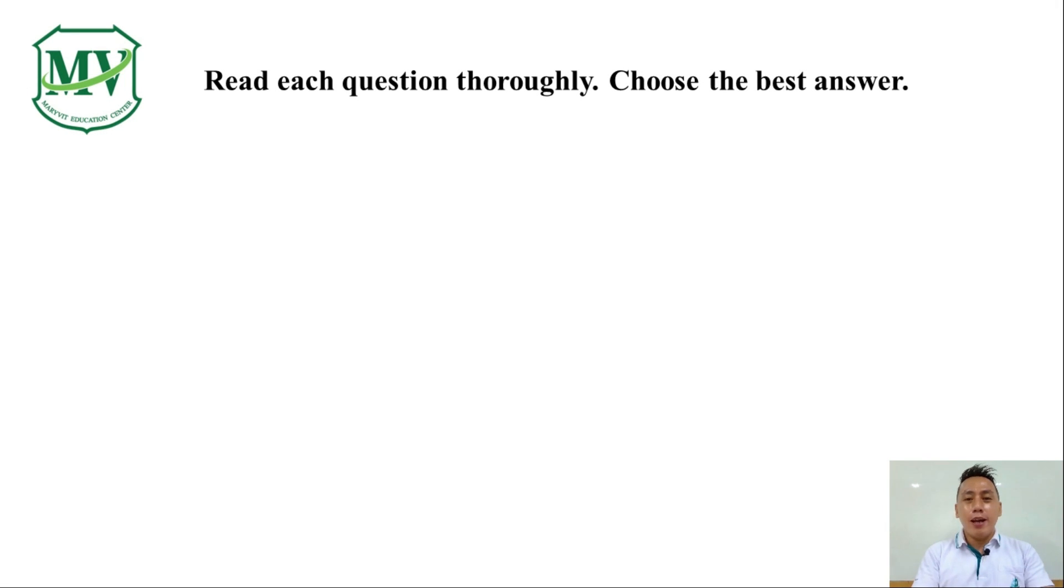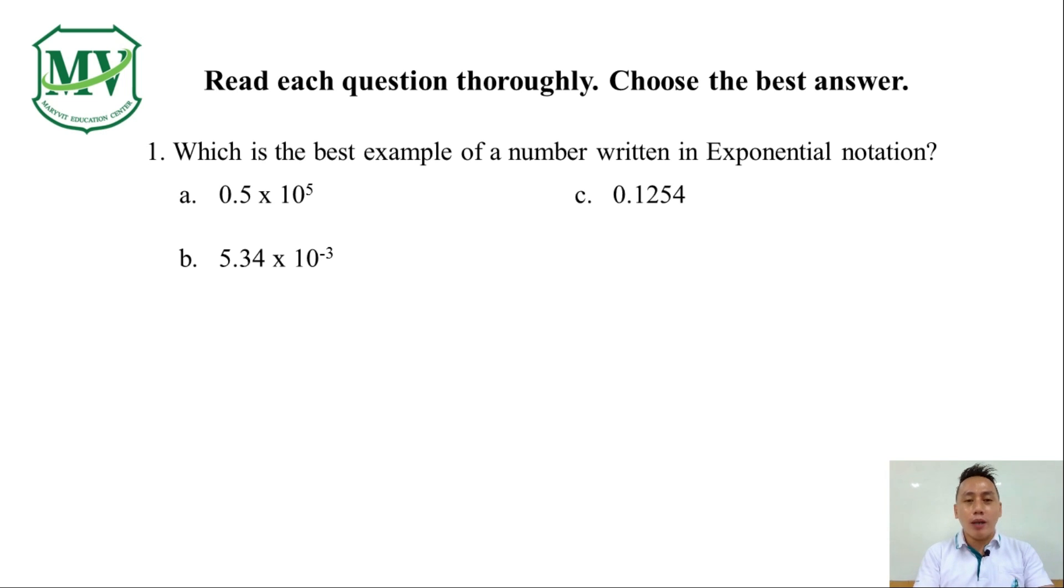Read each question thoroughly and choose the best answer. Number 1. Which is the best example of a number written in Exponential Notation? a. 0.5 x 10 raised to the power of 5. b. 5.34 x 10 raised to the power of negative 3. c. 0.1254 or d. 12.5 x 10 raised to the power of 2. Which one do you think is the best answer?